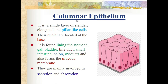Columnar epithelium is made up of a single layer of slender, elongated, pillar-like cells with nuclei located at the base. It is found lining the stomach, gallbladder, bile duct, small intestine, colon, oviduct in the female reproductive organ, and also forms the mucous membrane. It is mainly involved in secretion and absorption.